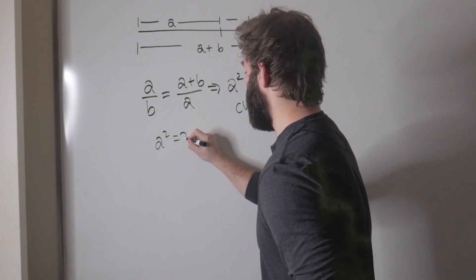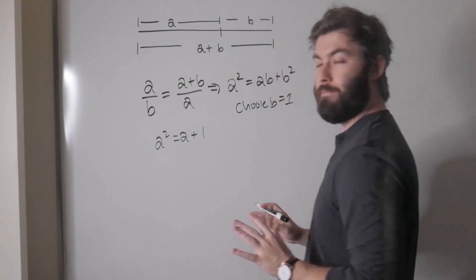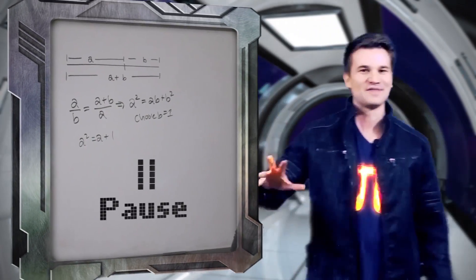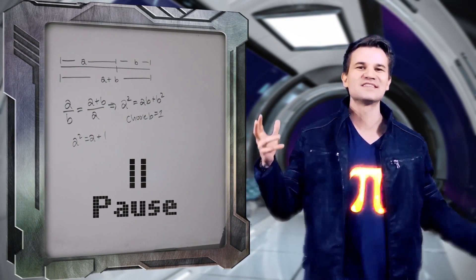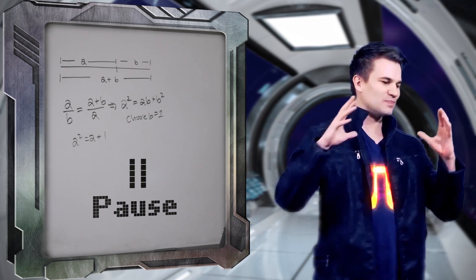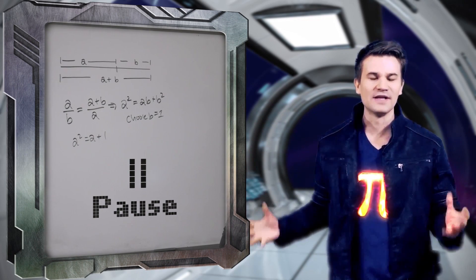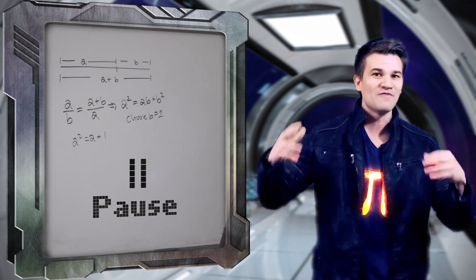Wait, wait, wait. Okay, that makes absolutely no sense. How can we just decide that b is equal to one? You can't do that. You can't just make an unfounded assumption like saying b is equal to one if we're looking for the value of a over b. We can't decide what part of it is—it makes absolutely no sense.